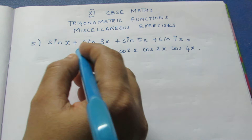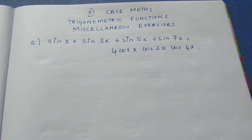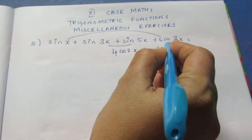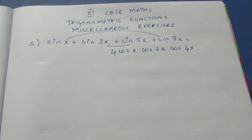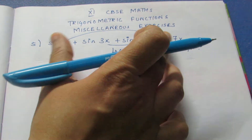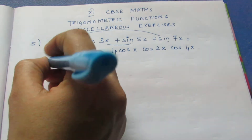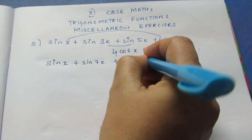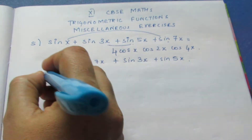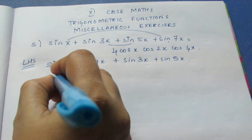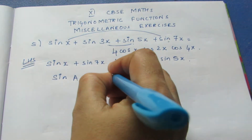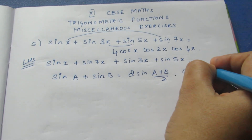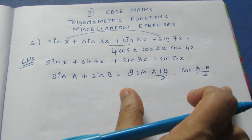We can take the terms in pairs of two separately and use the sin A + sin B formula. I am pairing sin x with sin 7x, and sin 3x with sin 5x, so that when I add them I get 8x. The formula sin A + sin B equals 2 sin((A+B)/2) · cos((A-B)/2) will be applied to each pair.